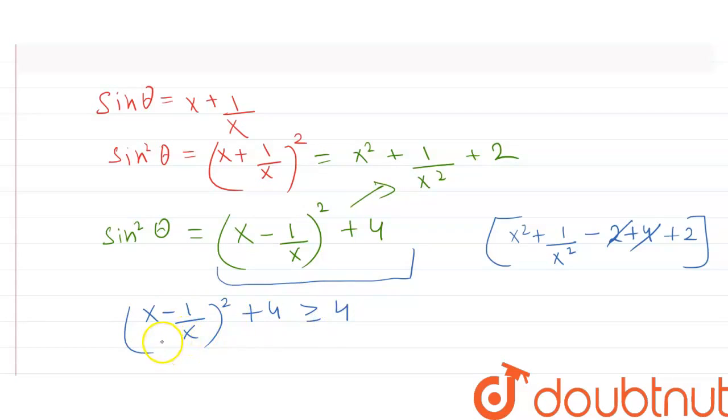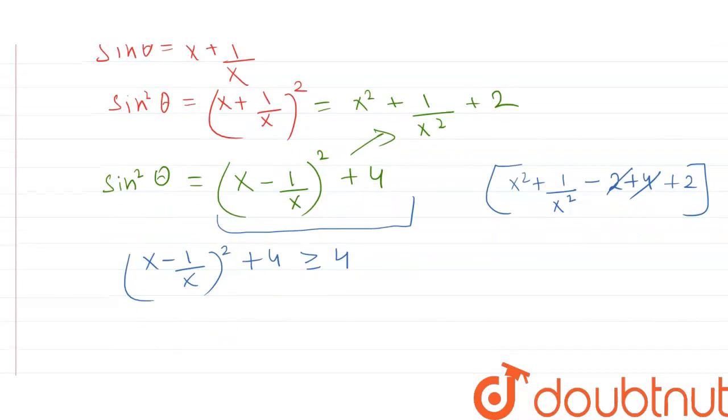This implies (x - 1/x)² + 4 should always be greater than or equal to 4. Either this term could be 0, so square of 0 equals 0, so it would become 4. And even if it's negative, suppose it is -1, -2, 1, 2, after the square, it will become a positive integer, and it will get added to 4, and the value will be greater than or equal to 4.